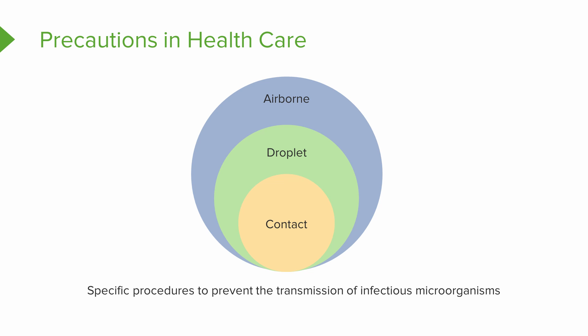Keep in mind these precautions are transmission-based. That means if a disease is passed by contact, then we use contact precautions. If it's passed by droplets, that's why we use droplet precautions. So when we use those names — contact, droplet, and airborne — that just refers to the way the diseases we're trying to prevent from spreading normally spread.